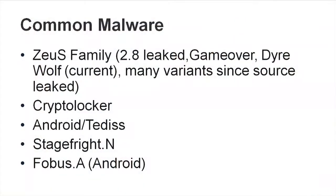Common Malware. Here's a bunch of names of some common malware — these are all modern. The Zeus family: 2.8 leaked, Game Over, Direwolf, and current variants. Direwolf is a current version of Zeus, and Game Over is a current version as well. Many variants have emerged since the source was leaked, and more continue to appear. Zeus is here to stay.